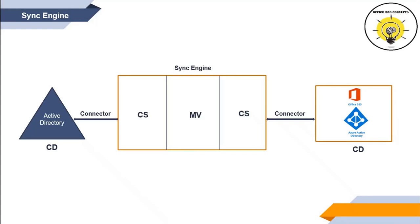In Azure AD Connect, a connected data source can be any data repository that organizes data in a database — for example, Active Directory or SQL Server. In a standard Azure AD Connect configuration, connected data sources are Active Directory and Azure Active Directory. If you are using SQL Server in your on-premise environment, you can use SQL Server as a connected data source as well. In short, connected data sources or connected directories are a storage space where your objects are stored.